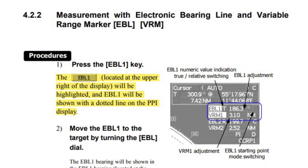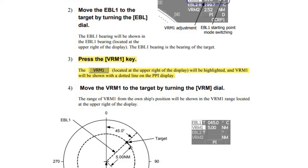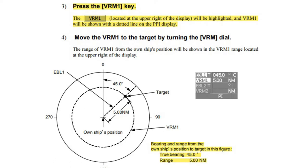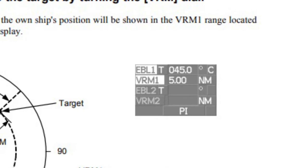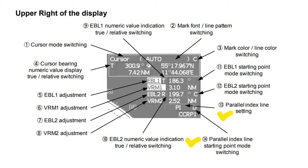Measurement with EBL and VRM: press the EBL 1 key. EBL 1 located at the upper right of the display will be highlighted and EBL 1 will be shown with a dotted line on the PPI display. Move EBL 1 to the target by turning the EBL dial; the EBL 1 bearing will be shown at the upper right. Press the VRM 1 key; VRM 1 will be shown with a dotted line. Move VRM 1 to the target by turning the VRM dial; the range from the own ship's position will be shown in the VRM 1 range at the upper right of the display.